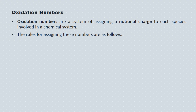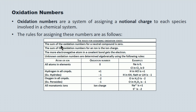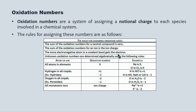The rules for assigning oxidation numbers to species are as follows. The sum of the oxidation numbers for a neutral compound has to equal zero. The sum of the oxidation numbers for an ion is the ion charge — and here we're talking about polyatomic ions. If you're dealing with a covalent molecule, say CO2 or H2O, the more electronegative atom gets the electrons, so it'll get the negative oxidation number and the less electronegative atom will get the positive oxidation number.